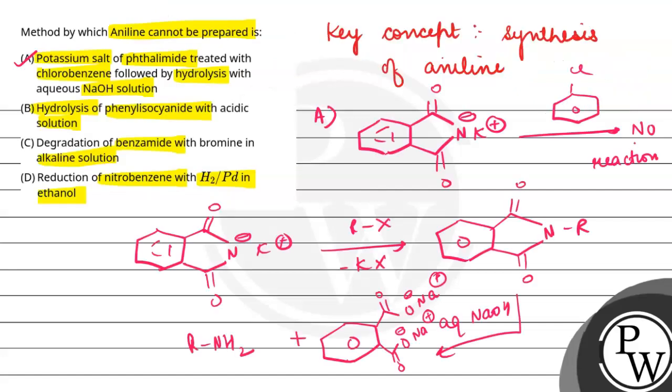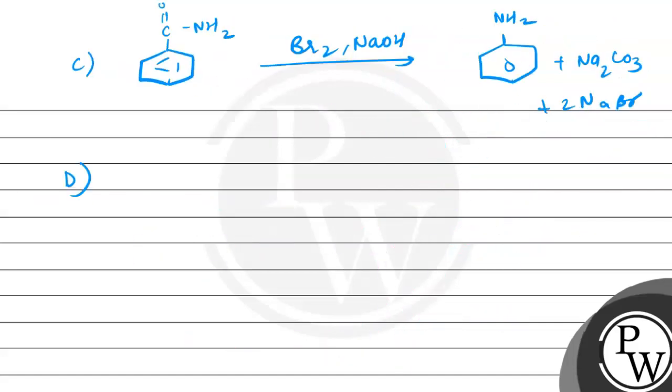Now this method was the reduction of nitrobenzene. We can use nitrobenzene with H2, platinum, and ethanol. So in this case, what is the product? Aniline. So in this case, we can synthesize aniline.